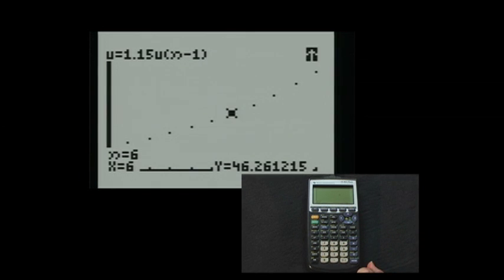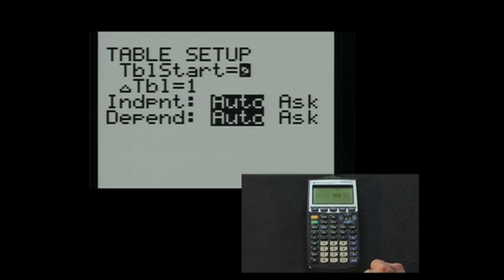Let us now look at the data in table form. We begin by pressing second window. This brings us to the table set screen. Since we want to view the table beginning from the initial value, we will set table start at 0, since this is an n value. The next line refers to the interval between each new n value that we would like to view.